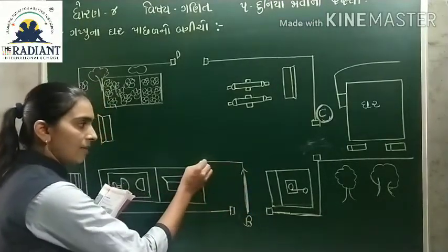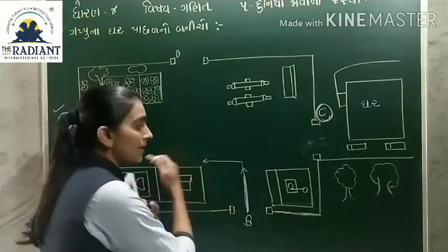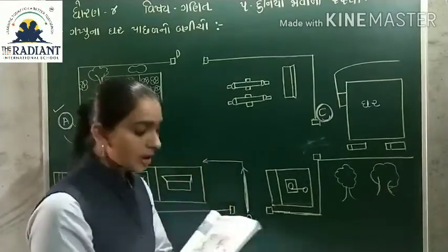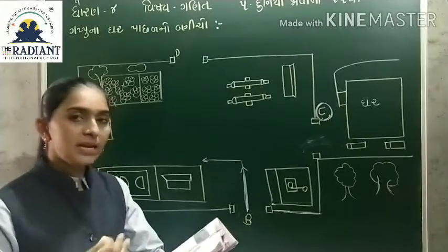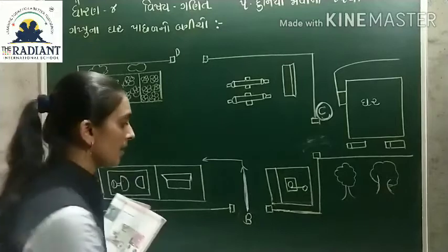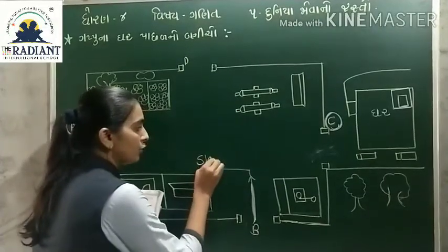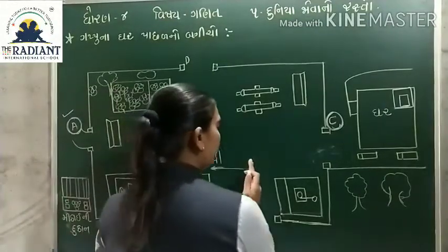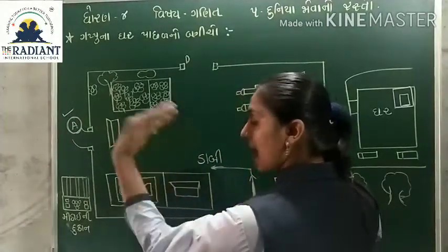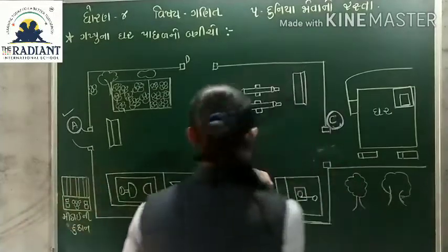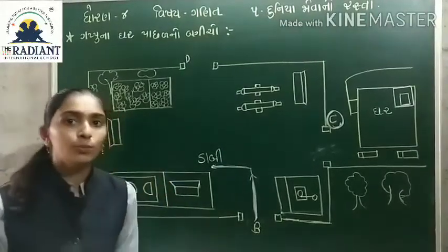ત્રીજો પ્રશ્ન: જો તમે B દરવાજા માંથી પ્રવેશ કરો, અહ્યાં લીલા કલર નો બાકસ છે — આ B-દરવાજેથી પ્રવેશ કરો, આ બાજુ ફરો — આ બાકસ તમારી કઈ બાજુ? ડાબી, જમણી, કે સામે? આ બાજુ ફરીએ — આ ડાબો હાત થાય. એટલે આ બાકસ ડાબી બાજુ પર છે.